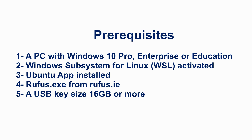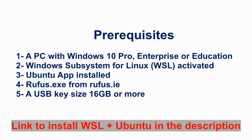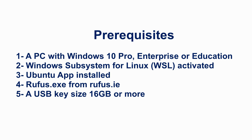The prerequisites are: you need a PC with Windows 10 Pro, Enterprise, or Education, because you need Windows Subsystem for Linux activated. You need the Ubuntu app installed — if you don't know how to do this, check the link in the description. You also need Rufus from rufus.ie and a USB key of 16 GB or more.